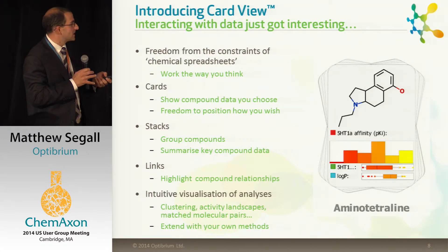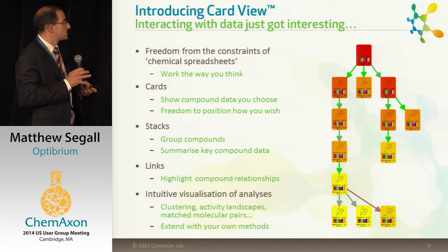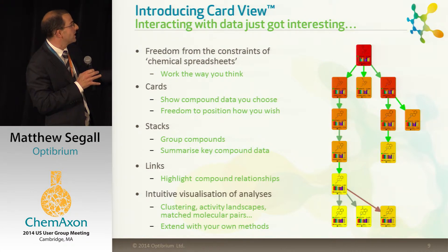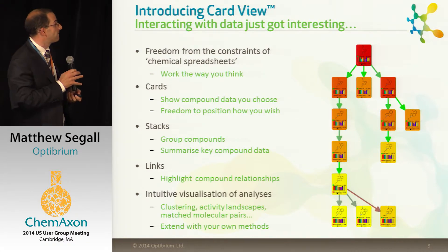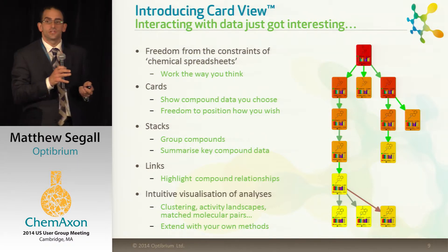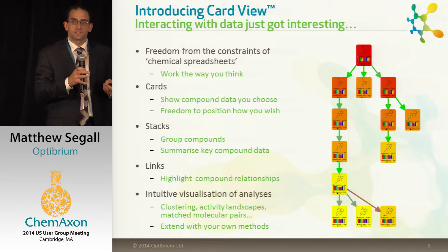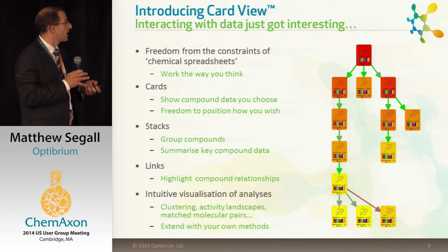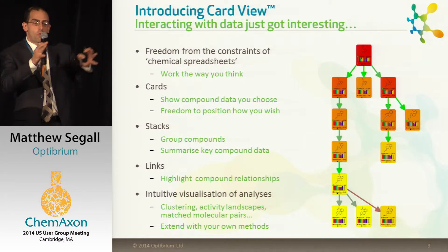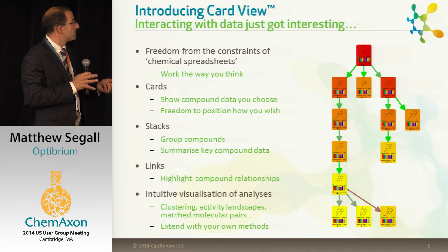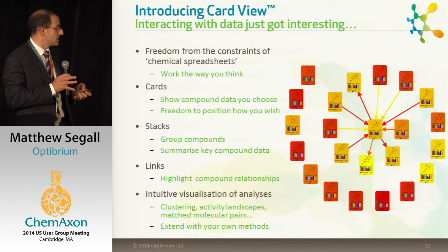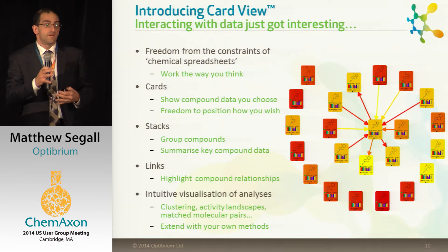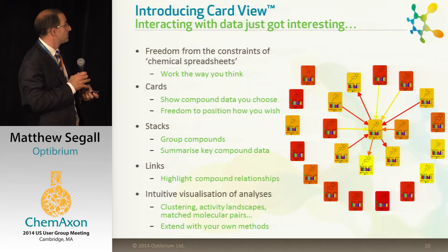We don't think about compounds in isolation, but also about the relationships between compounds. So we have links that highlight those key relationships. Here's an example of an optimization flow through a project where you've tried something, gotten to a dead end, gone down another path, and eventually you can see where that final compound ended up. These links are colored to show, in this case, the changes in potency, so that you can immediately identify those key transitions that give the improvement in potency that we're looking for.